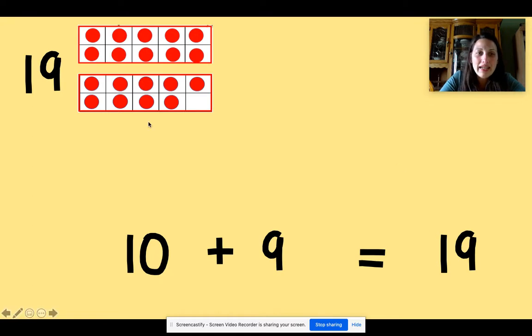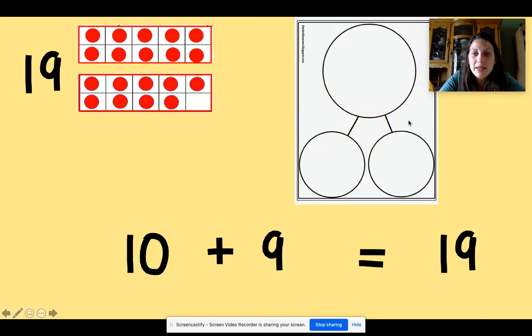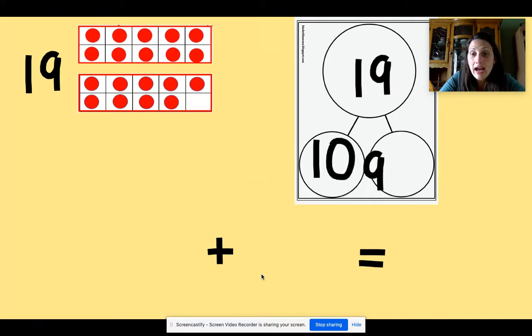Now here I have my 19 counters and my number sentence that we just made. We're going to put these numbers into a number bond. And the number bond has a big circle at the top for the whole number and two smaller circles at the bottom for the parts. So I can add these numbers into my number bond. What number goes at the top? What's the big number or the whole number here? The 10, the nine or the 19? 19. Yes. There's my 19. The other two numbers, the 10 and the nine are my smaller numbers or my two parts that make up 19 because 10 and nine make 19. Great.